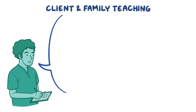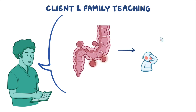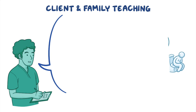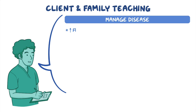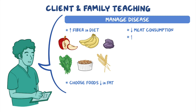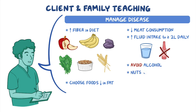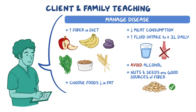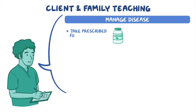Now let's move on to client and family teaching. First, provide an explanation of the disorder and how it causes the symptoms they are experiencing. Let them know that they can manage their disease by increasing the amount of fiber in their diet, by including foods like apples, bananas, prunes, green leafy vegetables, legumes, and whole grains, as well as choosing foods low in fat, decreasing their meat consumption, increasing their fluid intake to at least 2 liters daily, and avoiding alcohol. Let them know that nuts and seeds are good sources of fiber and are safe to eat with their condition. Also, instruct them to take the prescribed fiber supplement as directed, but to avoid the use of laxatives or enemas.